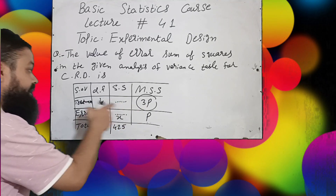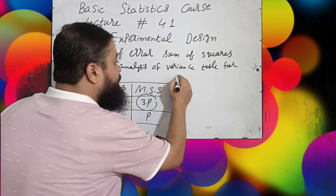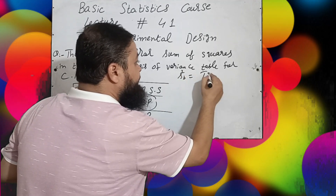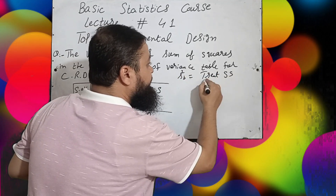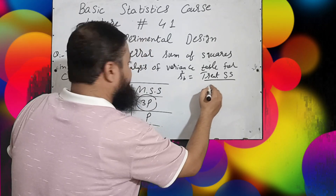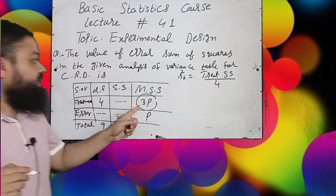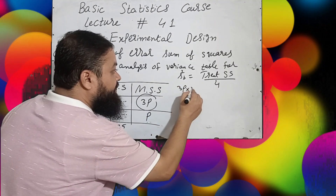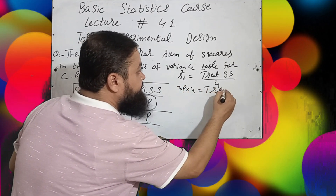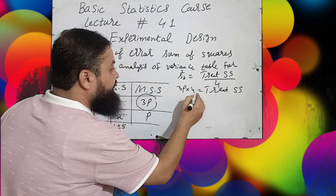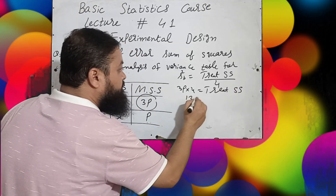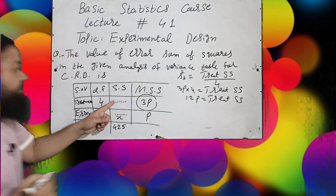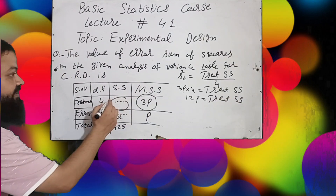s-squared for treatment is achieved by treatment sum of squares divided by its degrees of freedom, which is 4. So 4 will be multiplied, giving us: treatment sum of squares equals s-squared multiplied by 4. That means treatment sum of squares equals 3 times 4, which is 12p. So treatment sum of squares equals 12p.